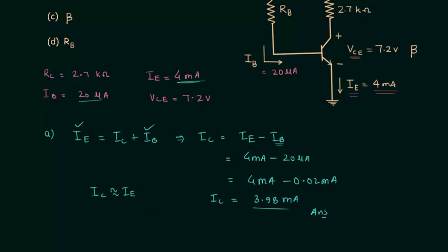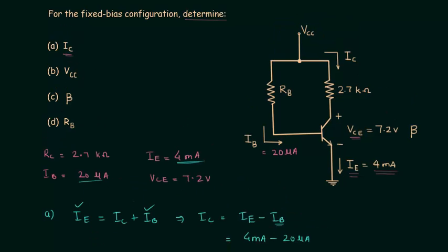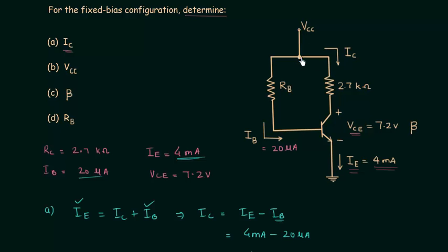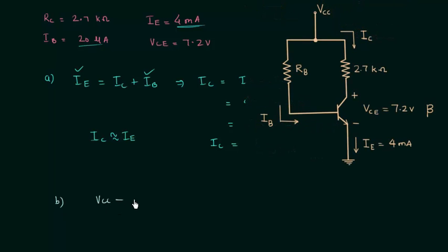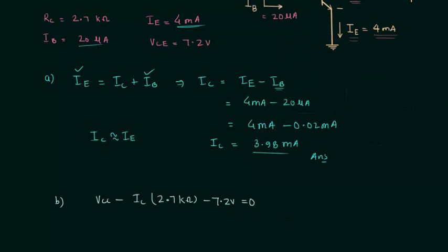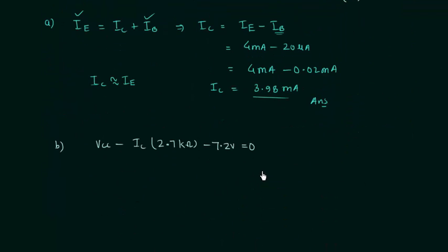Now I will solve Part B, in which we need to calculate VCC the biasing potential. I will apply KVL in the output loop. So we have VCC minus IC times 2.7 kilo ohms minus VCE equal to 0. The potential of ground is equal to 0 volts.